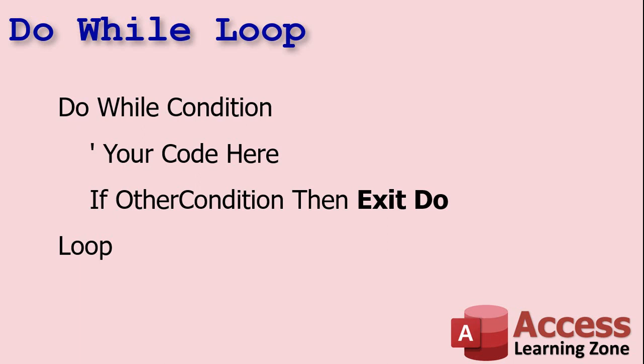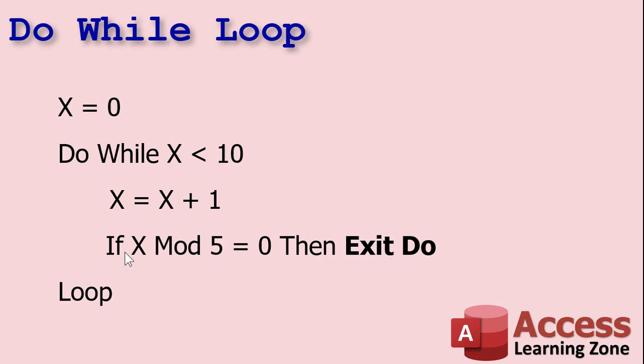Another nice thing about the DO WHILE loop is that it has an EXIT DO command. If you want to check for something in the middle of the loop — like if X mod 5 equals 0, meaning X is evenly divisible by five — then EXIT DO will jump right out. You don't have to worry about setting an abort variable like we did with the WHILE loop.